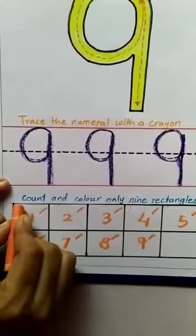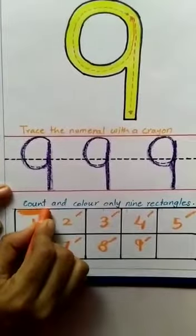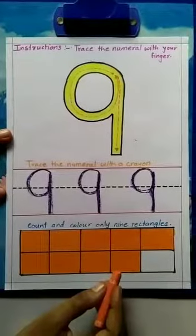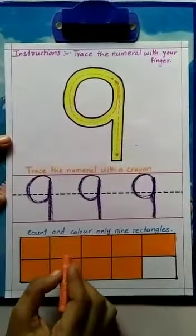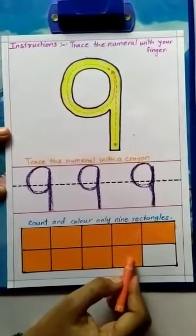Now we will start coloring. Here I am coloring the first rectangle. See this way I have colored all the 9 rectangles. Okay?